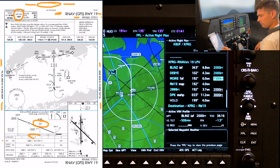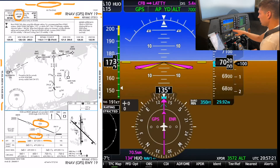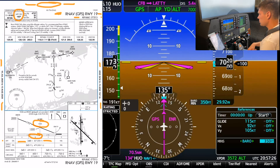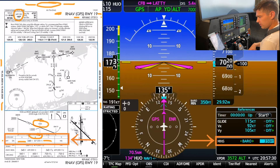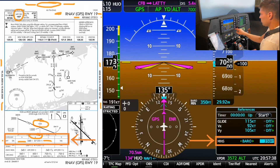Then continue down to our LPV category B minima of 348 feet and one mile of visibility. I'll bring up my reference information here on the PFD — you can see 350 is set; that's the closest I can get to being at but above 348 for the approach minimum.